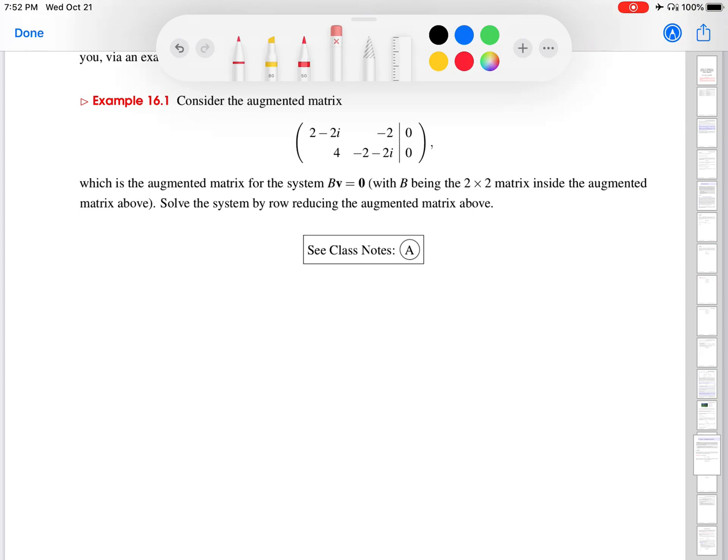So the point of this example was to show you how you do this when the entries of the matrix have complex numbers in them. So let's get started. I'm going to rewrite the matrix over here. And the first thing I'll say while I write this over is that we're going to follow the same exact row operations, the same three elementary row operations we're going to use here.